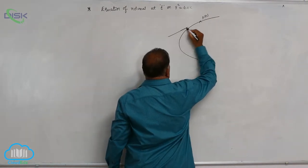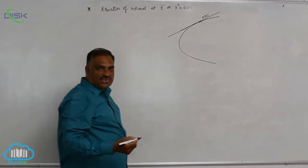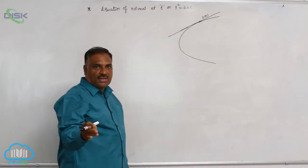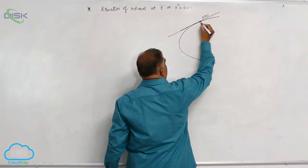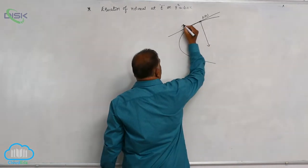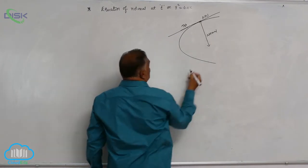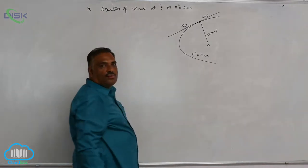Already we know that this is going to be the equation of tangent. And what is normal equation? A normal is a straight line passing through the point of contact and perpendicular to the tangent. This is tangent and this is normal. Of course, the parabola is always y square equal to 4ax.